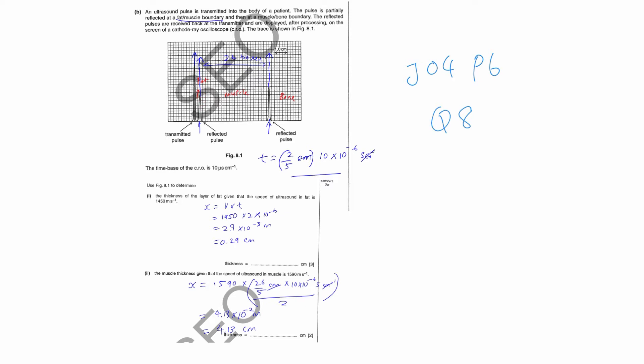We count the number of small boxes — horizontally there are 2. To find the total time, you take 2 boxes over 5 boxes, since 5 boxes is 1 centimeter. So you are using ratio to find how many centimeters is represented by 2 boxes: 2 over 5 gives you how many centimeters. Then you multiply by the time base, 10×10⁻⁶, because 10 microseconds per centimeter. But don't forget to divide by 2.